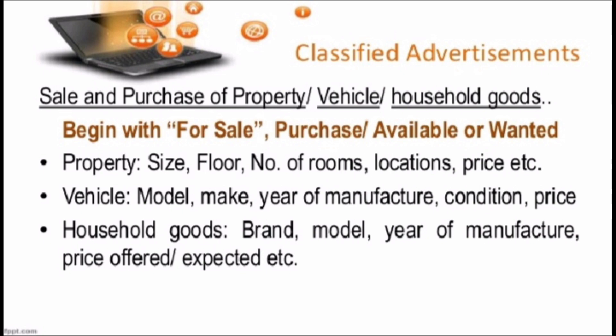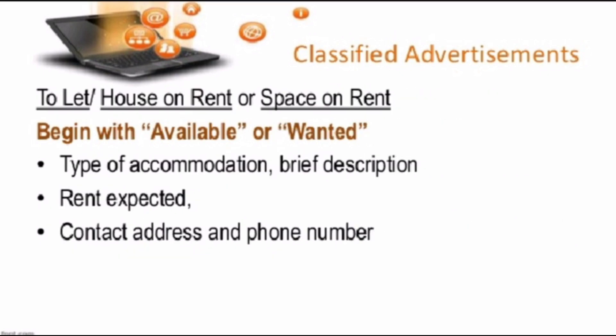The second category is sale and purchase of property, vehicle or household goods. Begin with 'For Sale', 'Purchase', 'Available' or 'Wanted'. For property, mention size, floor, number of rooms, location and price. For a vehicle, mention model, make, year of manufacture, condition and price. For household goods, mention brand, model and year of manufacture. To let a house or space on rent, begin with 'Available' or 'Wanted' and mention the type of accommodation.